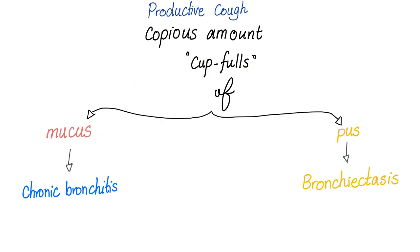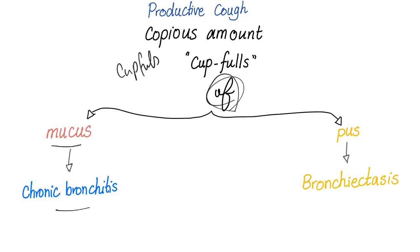On your exam question, if the patient is described as having a productive cough with copious amounts — cup-fuls of mucus — this is chronic bronchitis. Cup-fuls of pus — this is bronchiectasis, and it's usually due to cystic fibrosis.